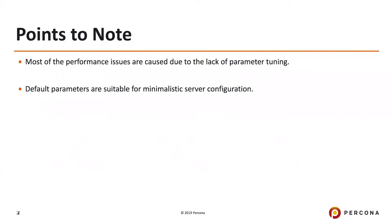You should tune them like you tune for Postgres, not like Oracle, because there are several architectural changes between Oracle and Postgres. Some commands or syntax may appear similar, but we need to be aware that there are a lot of things that are different between different databases. You cannot just compare directly with Postgres. Most of the performance issues are due to lack of parameter tuning. If you don't tune them and leave the default parameters — assuming that Postgres works fine with defaults — that may be a mistake. If you have a really minimalistic server configuration, these default parameters may be good enough.